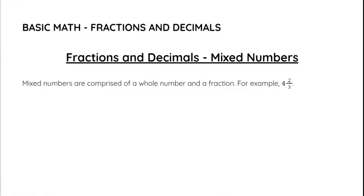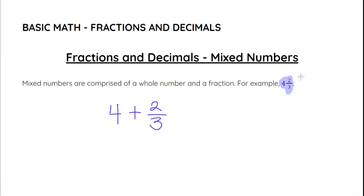In this video we are going to look at fractions, and specifically what we call mixed numbers. A mixed number is a number comprised of a whole number and a fraction. For example, 4 and 2 thirds is a mixed number. It actually means 4 plus 2 thirds — the whole number and the fraction combined. It is more commonly written without the plus sign, but that is what it means.